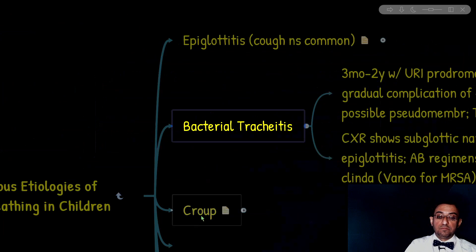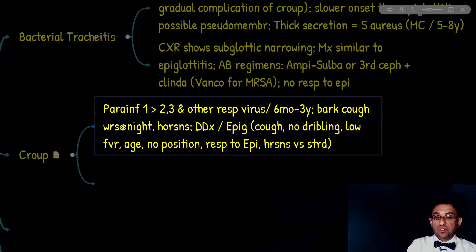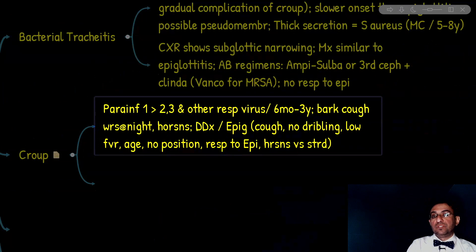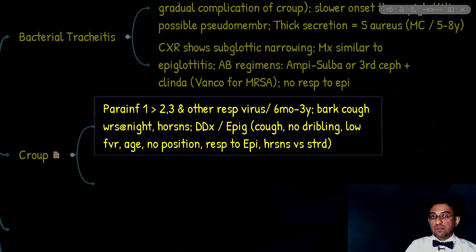Moving to croup: what is it? It is an acute infection of the larynx, trachea, or bronchi, with the alternative name laryngotracheobronchitis. Most commonly it is mediated by parainfluenza type 1, more than types 2 and 3, but other respiratory viruses such as influenza virus, adenovirus, or RSV could be the culprit.